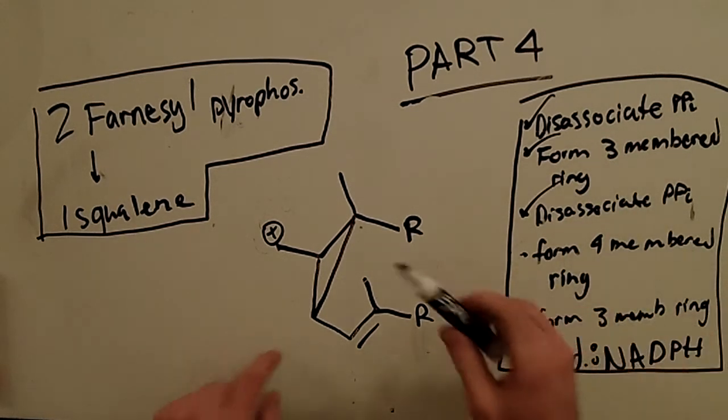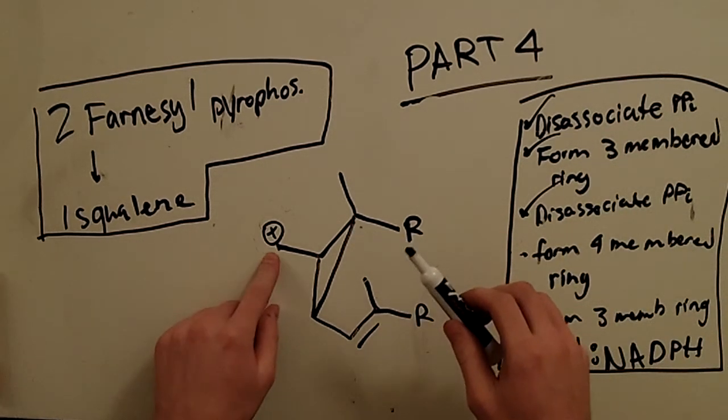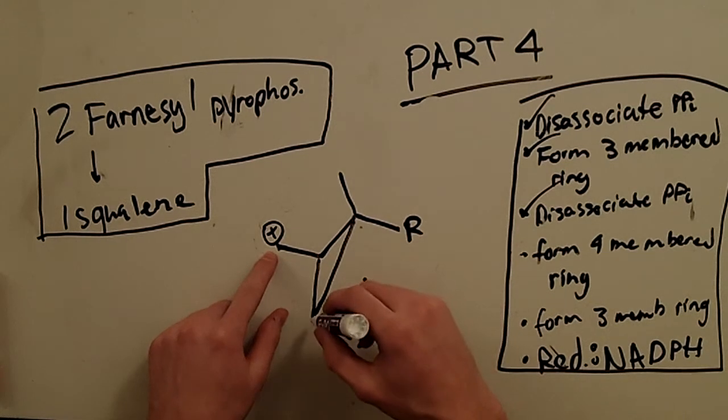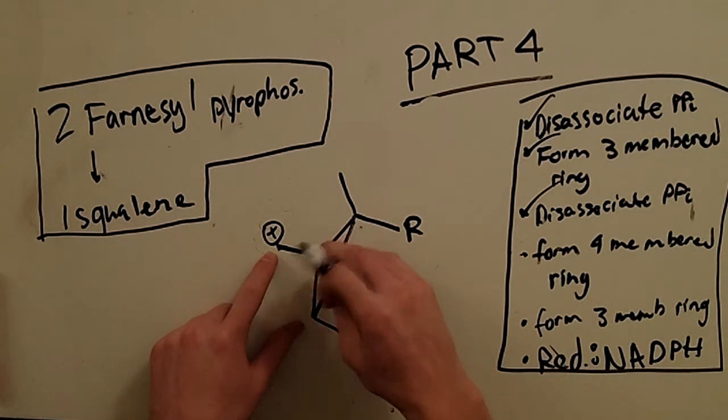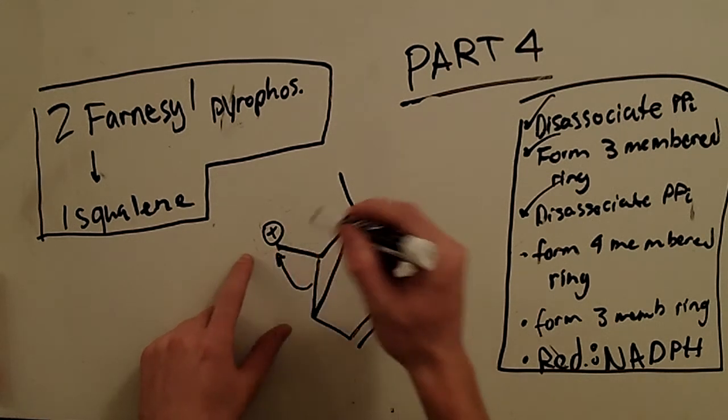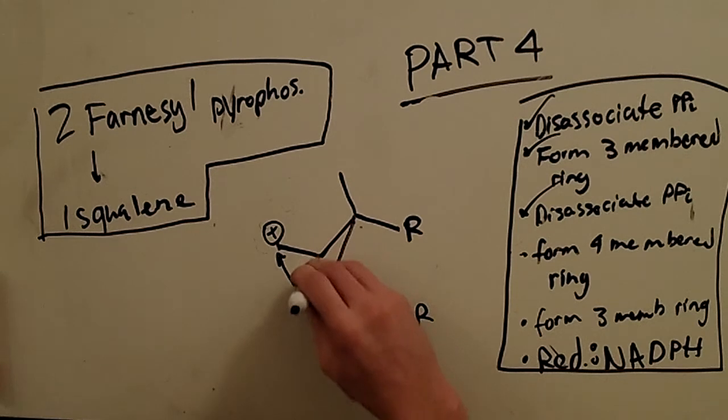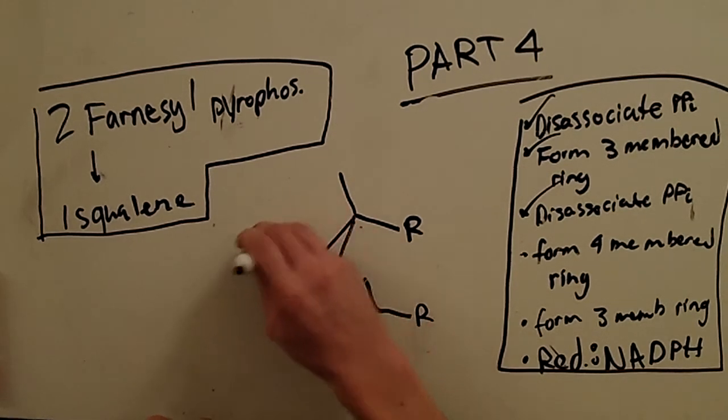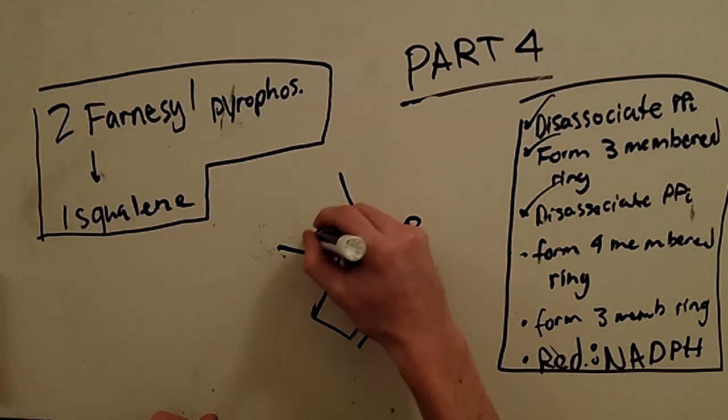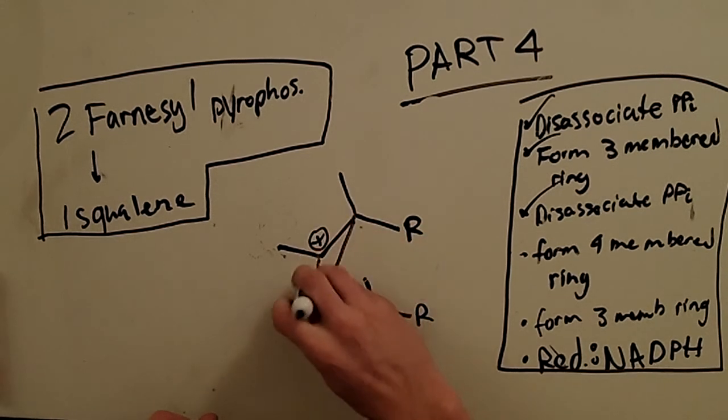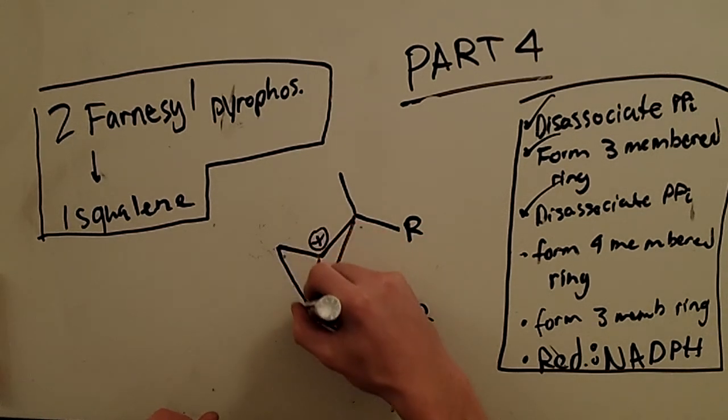We've got to form the four-membered ring. Well, there's a positive charge here. And so how do we do that? We just walk this on over like so. And that transfers the positive charge onto this carbon here. And we've got the four-membered ring.